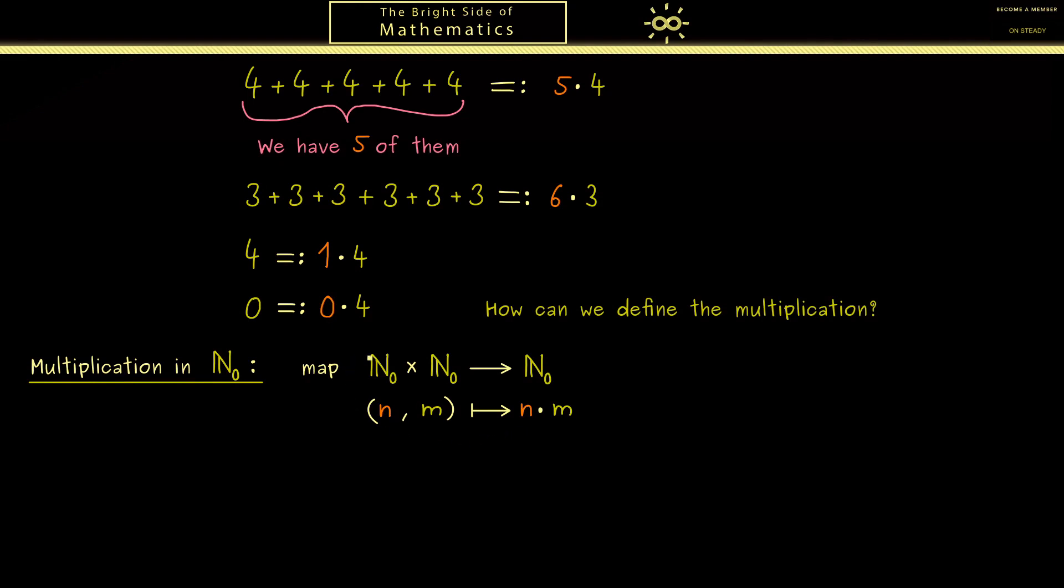So maybe this looks all familiar because we had the same discussion when we introduced the addition, and indeed we can use a lot of things we've already learned. In particular we know we don't have to give an explicit definition, we can give a recursive definition. Therefore we first have to say how the starting point 0 acts, and that's what we've already discussed: we should get out 0 no matter what m is.